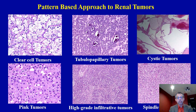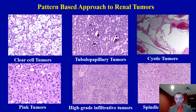In my previous presentation, I emphasized that for the diagnosis of renal cell tumors, a pattern-based approach can be very effective. Using this approach, renal tumors can be classified into six different patterns: clear cell tumors, tubulopapillary patterns, cystic pattern, pink tumors, high-grade infiltrative tumors, and spindle cell tumors. There is a separate YouTube video on this pattern, so I would encourage you to check that out as well.